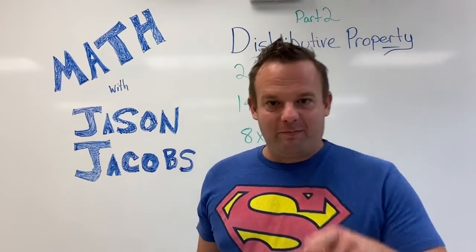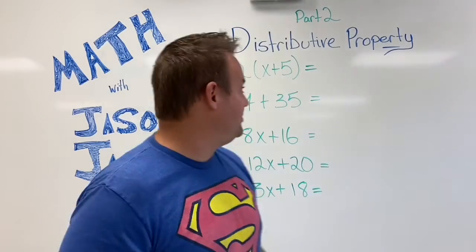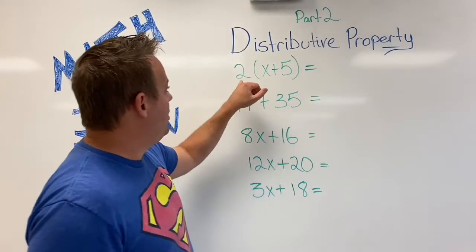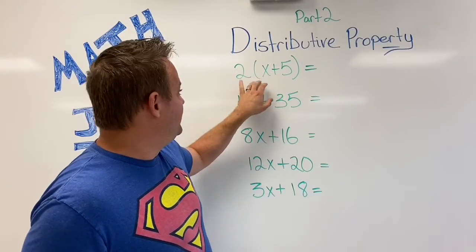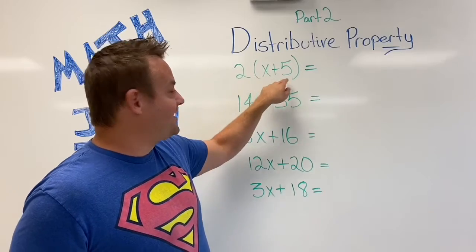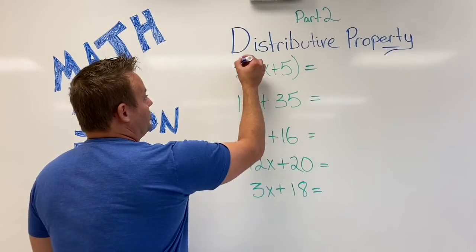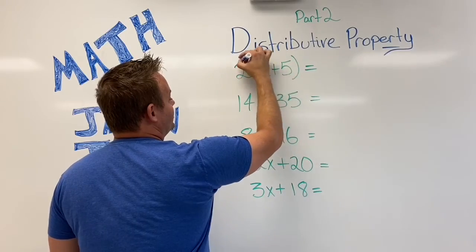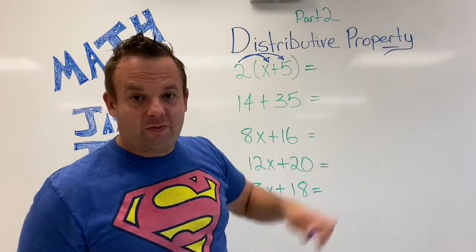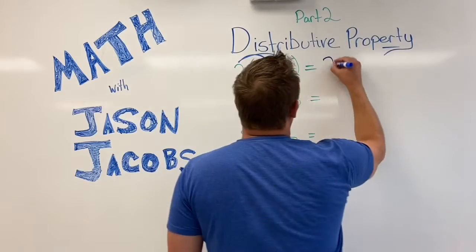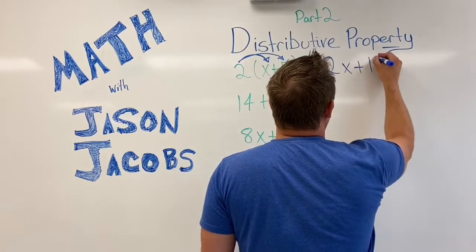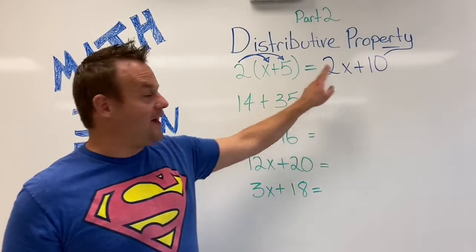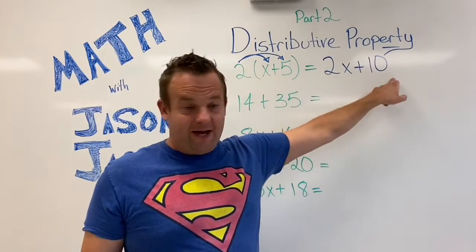Distributive Property, part two. This is part two to learning all about the Distributive Property. If you missed part one — we have the Distributive Property over addition here: two times the quantity X plus 5. So we go 2 times X plus 2 times 5. You see how the 2 distributes all the way over, giving us 2X plus 10. 2 times X is 2X, and 2 times 5 is 10.